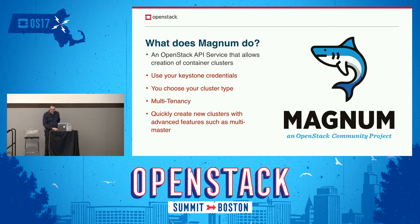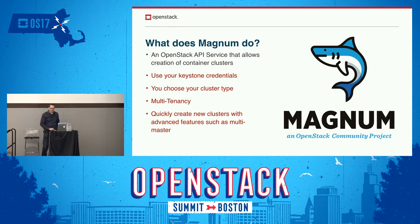Before I get started, I want to give you some quick background about what Magnum is and how it works. Magnum is an API service that allows you to create container clusters on your OpenStack cloud. It uses your existing identity credentials, allows you to choose what type of cluster to create, and has a full multi-tenancy solution. In the example of our popular Kubernetes driver, it'll allow you to create a multi-master cluster in a matter of a few minutes, which isn't possible with other prevailing tools.